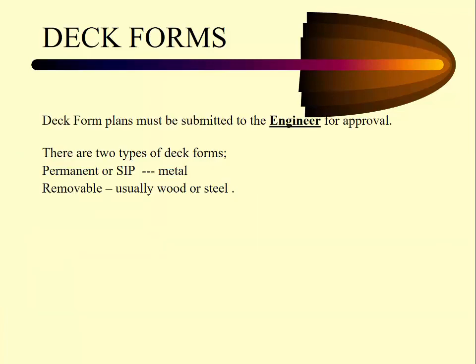There are mainly two different kinds of deck forms: stay-in-place decking, which is permanent, or removable, which is either wood or steel. The deck form plans must be submitted to the engineer for approval. These stay in the section office for approval — they do not come to central office. The engineer is looking to make sure they have the right width and the gauge is calculated, and then they're filed.